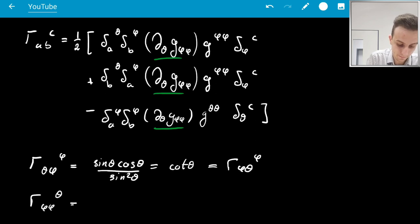is going to be G^θθ inverse, which is just one, and then the derivative without the factor of two and the minus sine. And that's it. Those are the Christoffel symbols of the sphere. Hope you guys liked this quick video. I'll make another one for some more metrics.